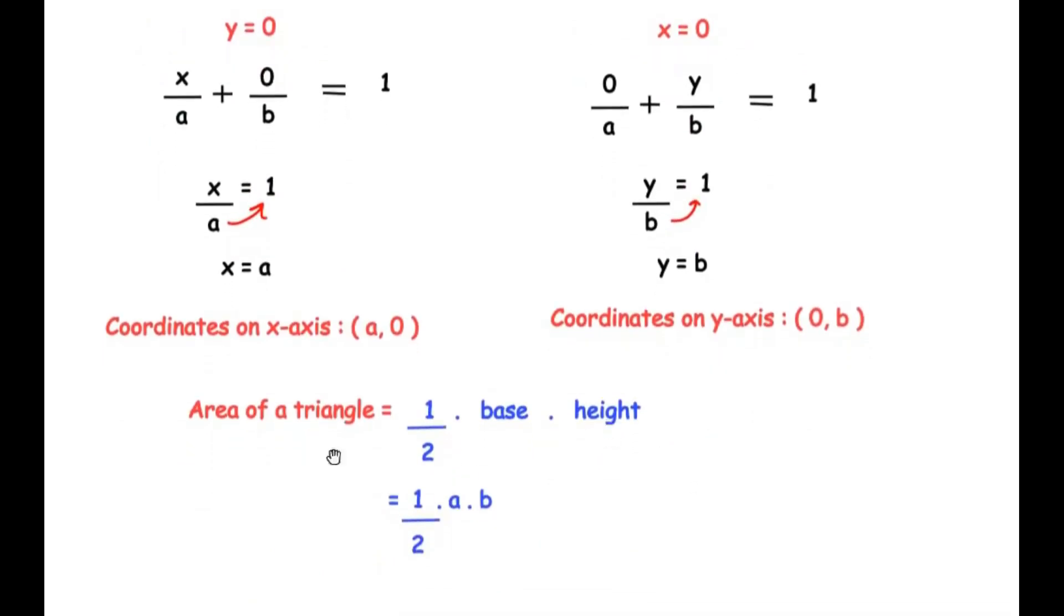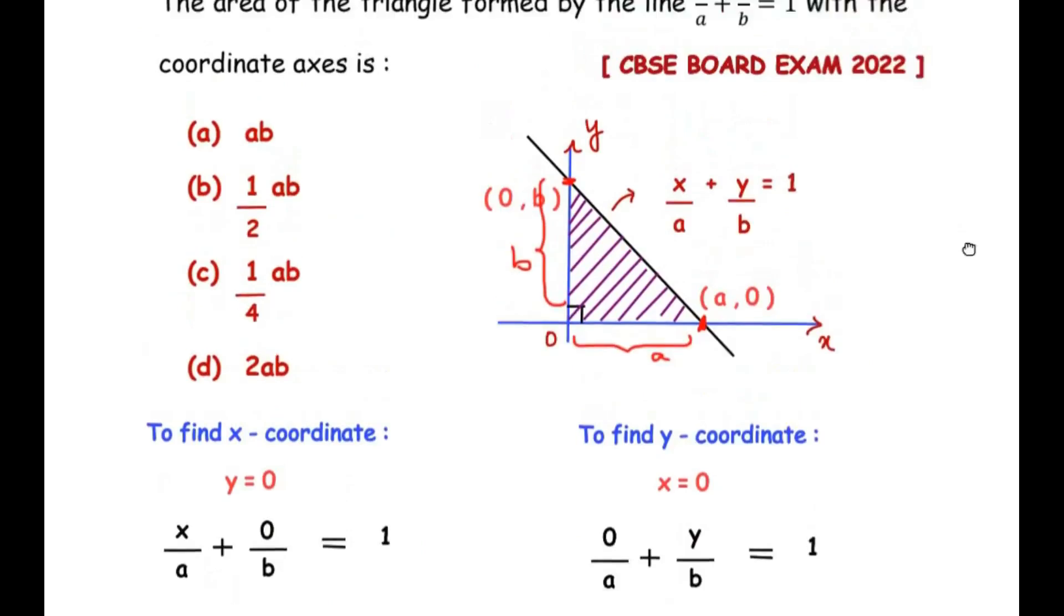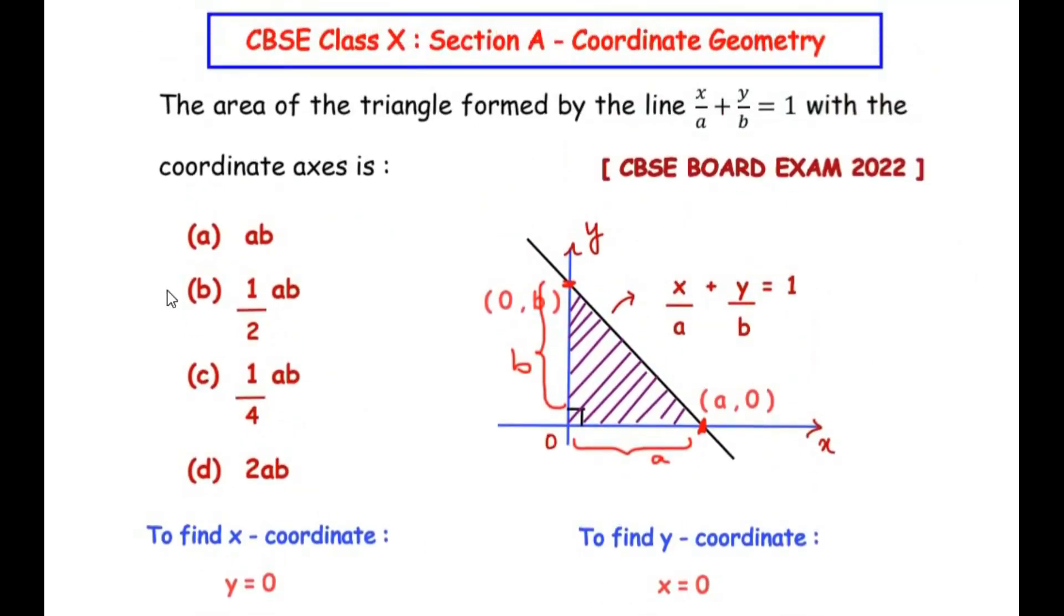So the area of the triangle formed by the line is 1 over 2 times a times b. So this is our answer. So let us see if this is in the options above. So we have here option B as 1 over 2 ab. I hope you have understood all the steps and liked the video.